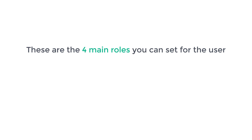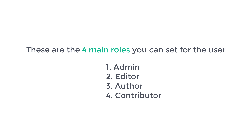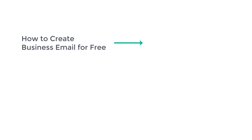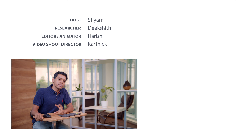So these are the four main roles you can set for a user: first is Admin, then Editor, Author, and Contributor. That's it guys — this is how you can add new users to your WordPress site and choose what they can access. Next, if you want to create a business email for your website, you can watch the next video which shows you how to create a business email for free. Thanks for watching, I'll see you in the next video. Bye-bye.